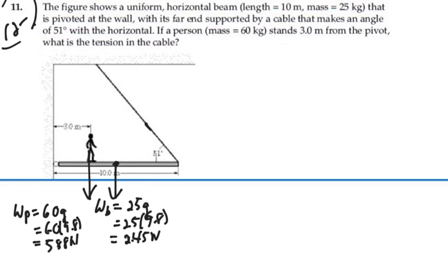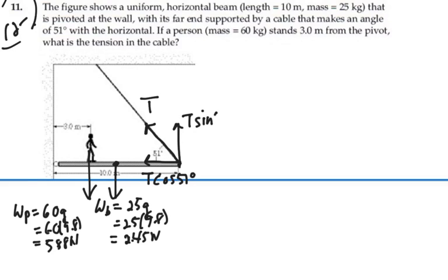We've got a force of tension acting at a 51 degree angle from the horizontal. Let's break that up into two components: T cosine 51 degrees going to the left, and T sine 51 degrees going vertical.